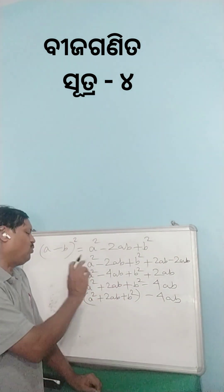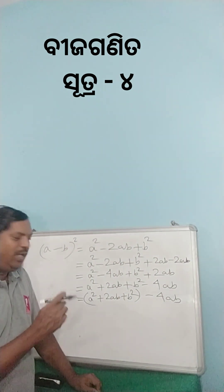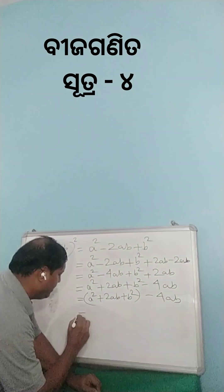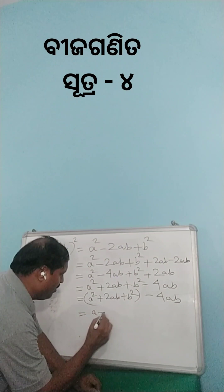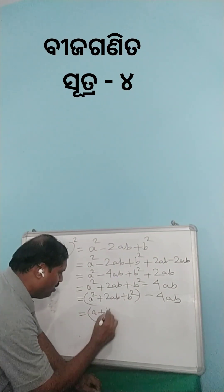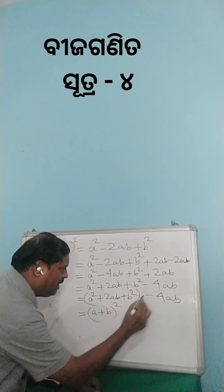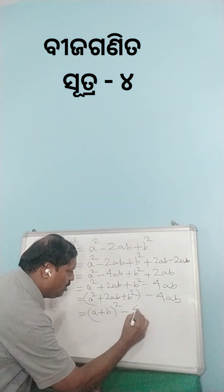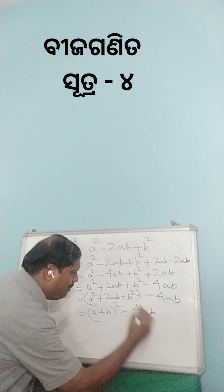A square plus 2AB plus B square is equal to A plus B whole square. So this is equal to A plus B whole square minus 4AB.